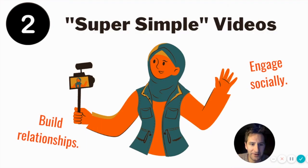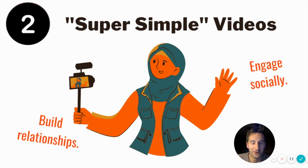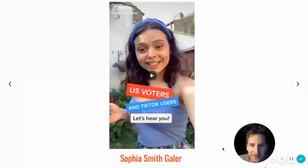Videos are a really powerful way to build relationships with your audience. They're a way to engage with them socially and on a personal level. They can be short and informal — they don't have to have a ton of production value or be super polished. For example, Sophia Smith Gaylor is a BBC news correspondent who's really popular on TikTok and she uses TikTok to engage her audience in a lot of different ways.